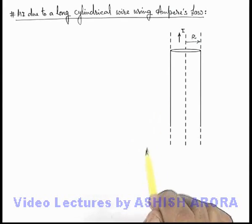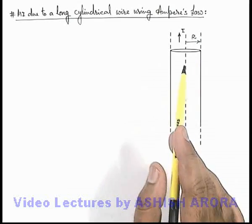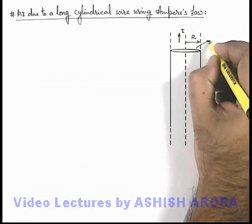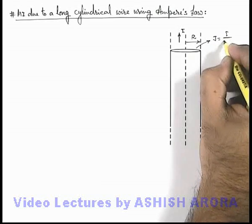Now in this situation if we consider that this current I is uniformly distributed over its cross section, then current density J in this wire can be written as I by π R².